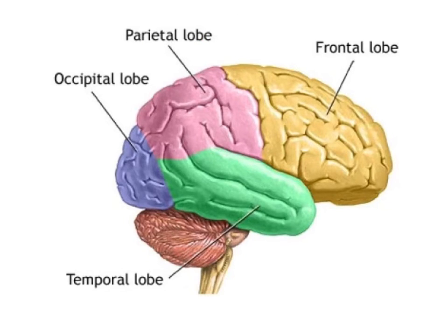The parietal lobe has two major functions. One, it receives and processes somatosensory information. Somatosensory means touch.